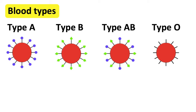Type A blood group has A antigens, so antibodies in the body only recognise these as being the body's own cells. Blood group A has anti-B antibodies, so the antibodies will attack group B cells if they enter the body, because the antibodies can identify B antigens.